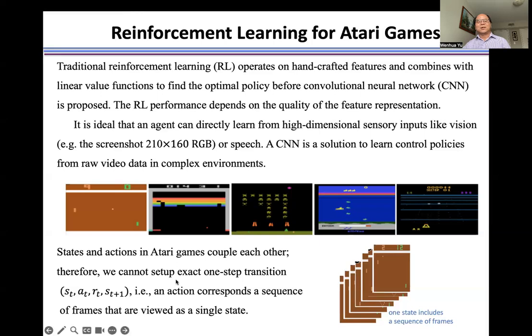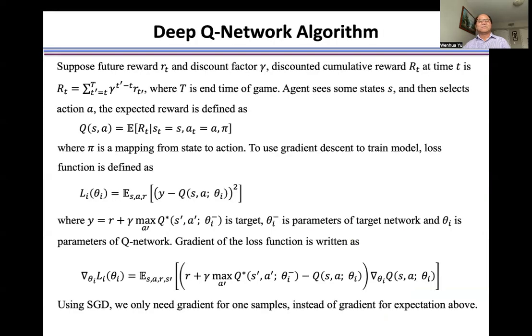But because one action corresponds to a sequence of frames, now we just view a sequence of frames as a single state. To solve it, to find the control policy for Atari games, we use Deep Q network.